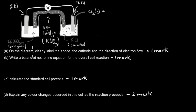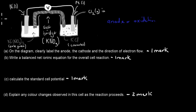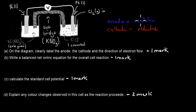For Part A, clearly label the anode, cathode, and direction of electron flow. The anode is where oxidation occurs — that's the loss of electrons. Electrons are gained at the cathode, so electron flow is always from anode to cathode. To find out which electrode is which, we look at the standard reduction table.